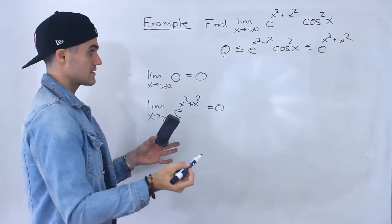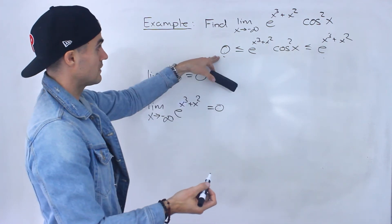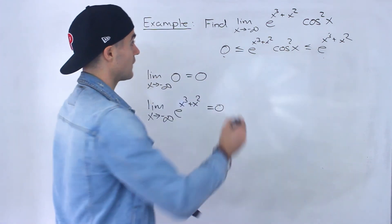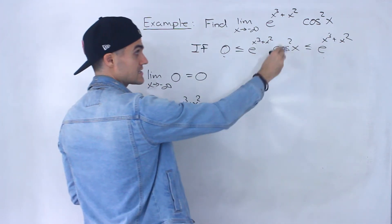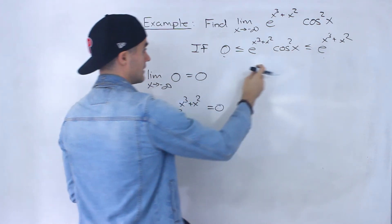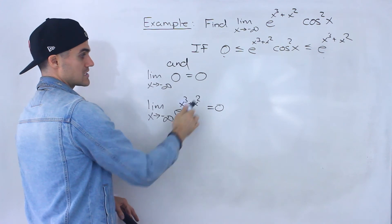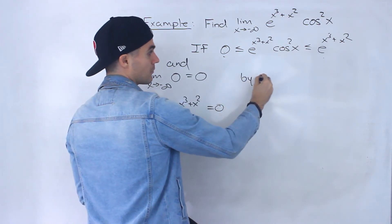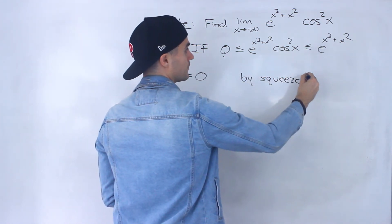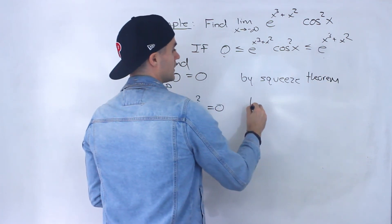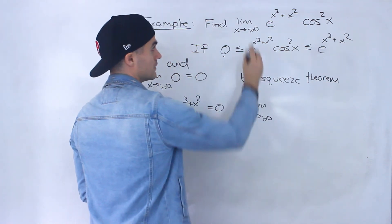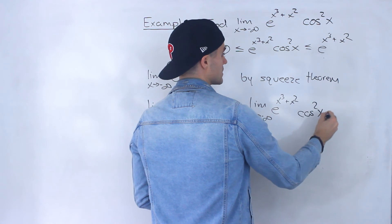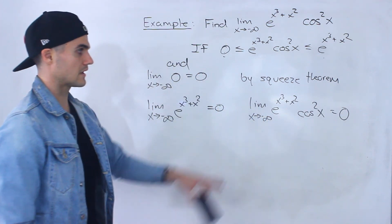So by the squeeze theorem: as x approaches negative infinity, the lower bound approaches 0 and the upper bound e^(x³+x²) also approaches 0. Since our function e^(x³+x²)·cos²x is always between these two, by the squeeze theorem, the limit as x approaches negative infinity of e^(x³+x²)·cos²x is also equal to 0. And that's the final answer.